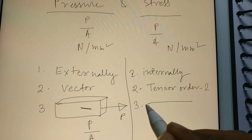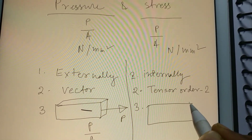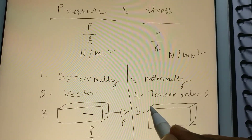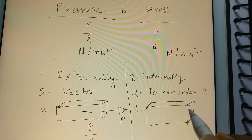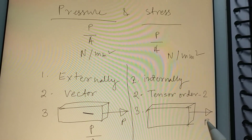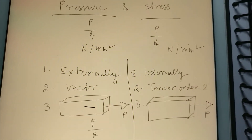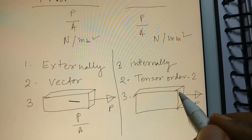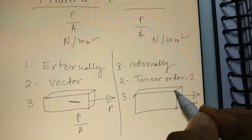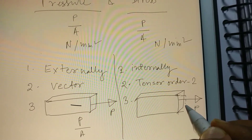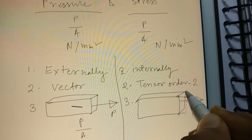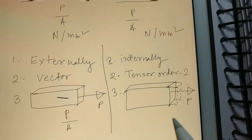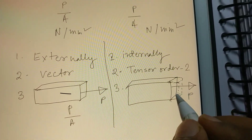Now for stress, same drawing. When an external load is applied, the material must deform — it will deform. So this is the deformed shape. Now if I draw the free body diagram of that particular deformed shape.